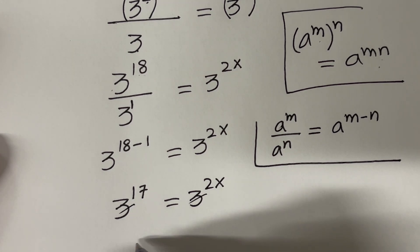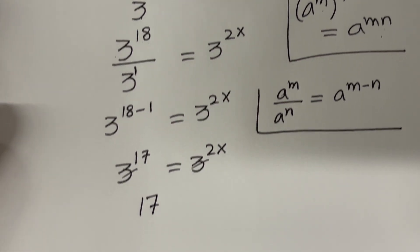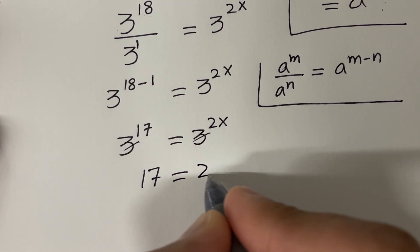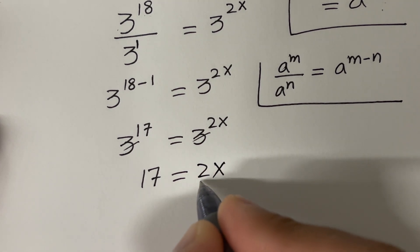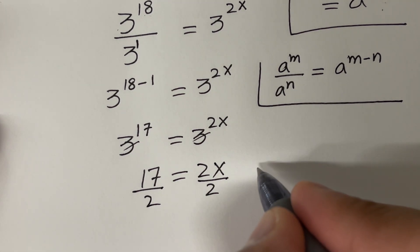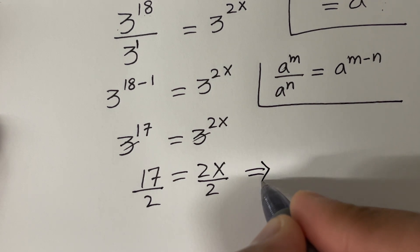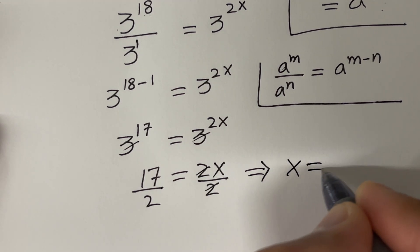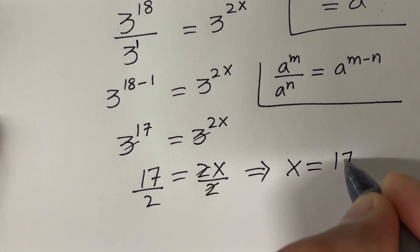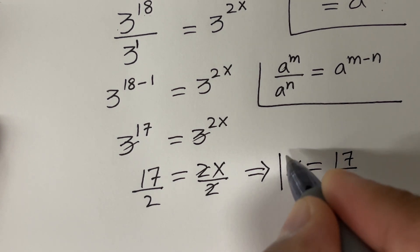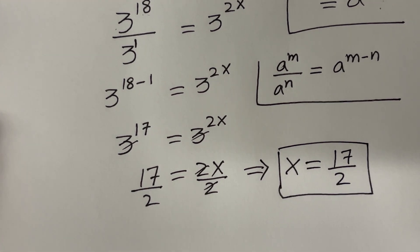That simplifies to 3 raised to the power 17 equal to 3 raised to the power 2x. Since the bases are the same, the exponents must be equal. So let's divide both sides by 2, giving x equal to 17 divided by 2.